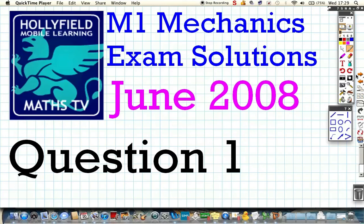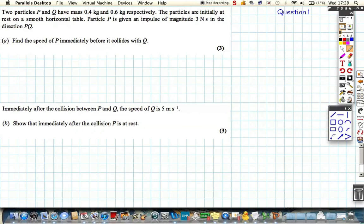This is our brand new paper, June 2008. It's the Mechanics M1 paper, and we're going to start with question number one. It's a classic collisions question, and you can tell that from two particles on a smooth horizontal table and being told about the impulse. The only difference is we're starting with the impulse part of the question. We usually start with the collision part, with the principle of conservation of momentum.